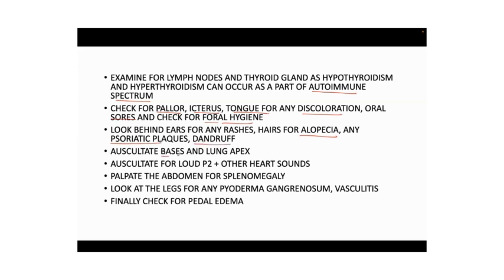Auscultate the lung bases and apex, listen for a loud P2 or other heart sounds. Ask the patient to lie down, palpate the abdomen for splenomegaly, look at the legs for pyoderma gangrenosum or vasculitic rash, and finally check for pedal edema. All these things you can do in five minutes if you keep practicing at least once or twice a week — please go and get rheumatology cases to practice wherever you are working or attending as a clinical observer.